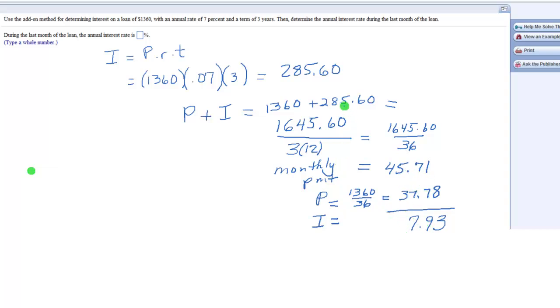Or you can take your interest, the $285.60, and divide that by 360. So you could do either one.